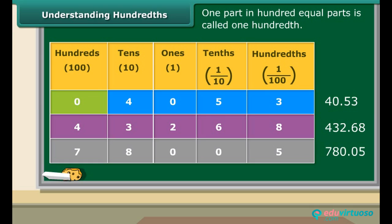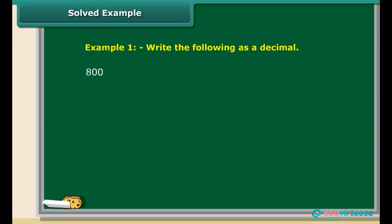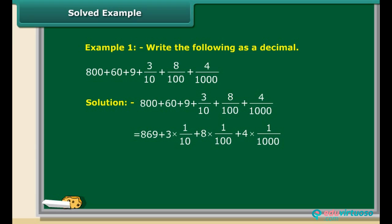We can extend the place value table further from hundreds to thousandths. Let us test our understanding by solving some questions. Write 800 plus 60 plus 9 plus 3 tenths plus 8 hundredths plus 4 thousandths as a decimal. 800 plus 60 plus 9 is 869. 3 tenths plus 8 hundredths plus 4 thousandths is 0.3 plus 0.08 plus 0.004, which adds up to 0.384. So the answer is 869.384.